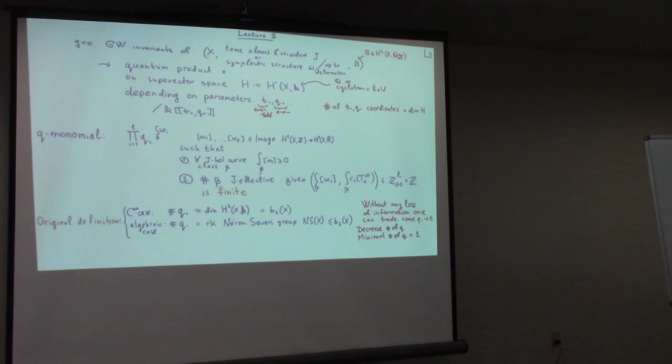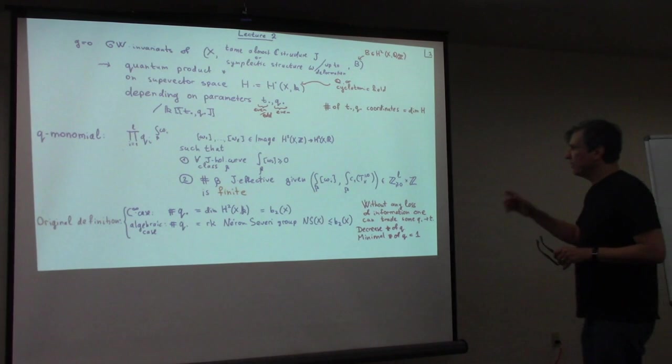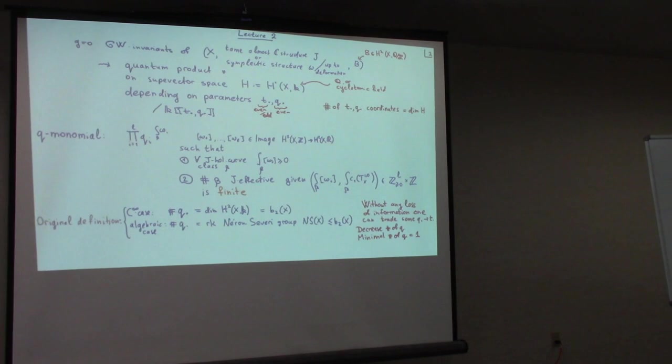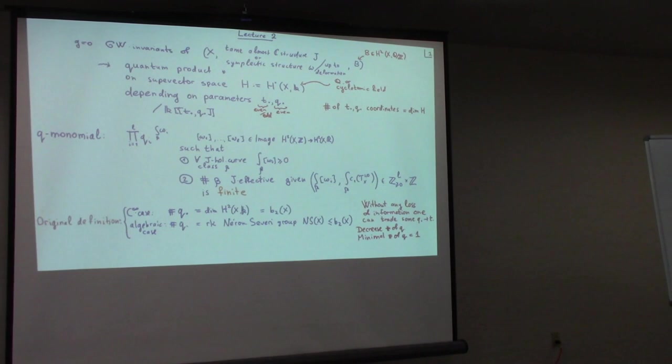Variable Q could be... in fact, I don't have to go to the full second homology group. It could be some smaller number of parameters Q, because when I make a generating series, I put a contribution of each homology class beta as a Q-monomial product of U_i to some power of some integrals. I want these integrals to be integer and positive — integers guarantee that the homology classes are an image of second homology with integer coefficients in real second homology.